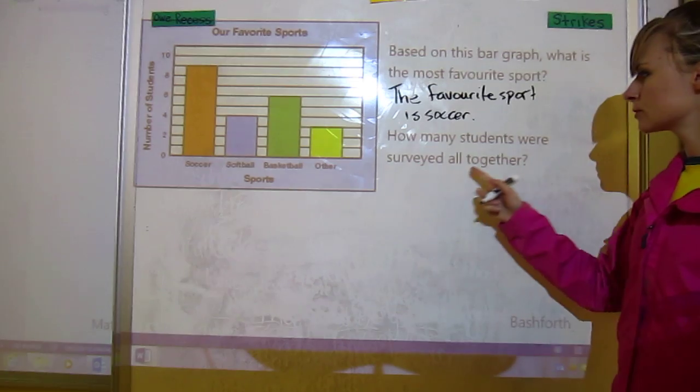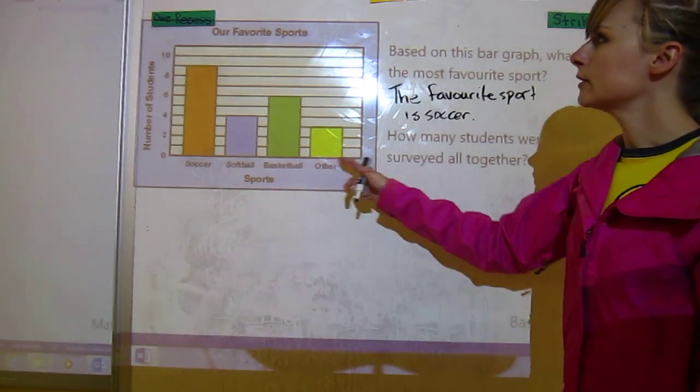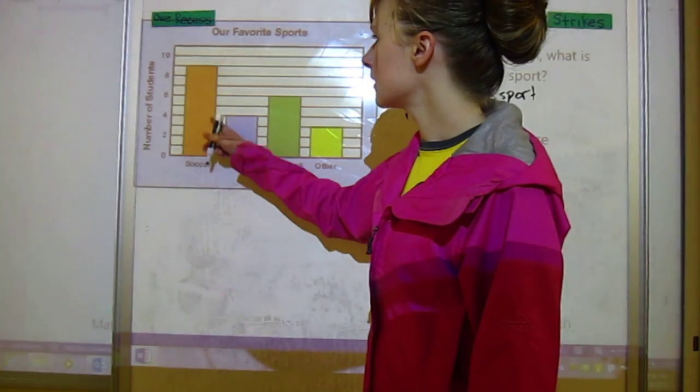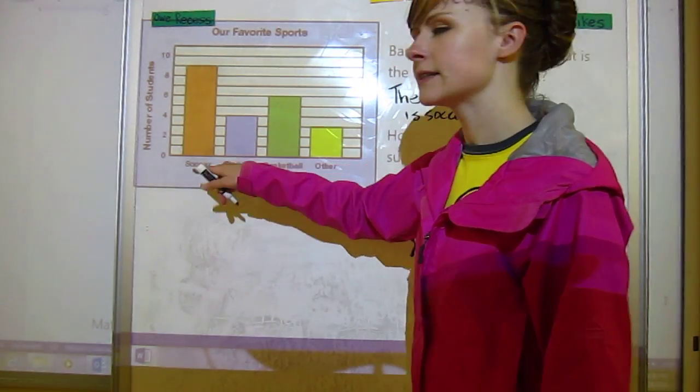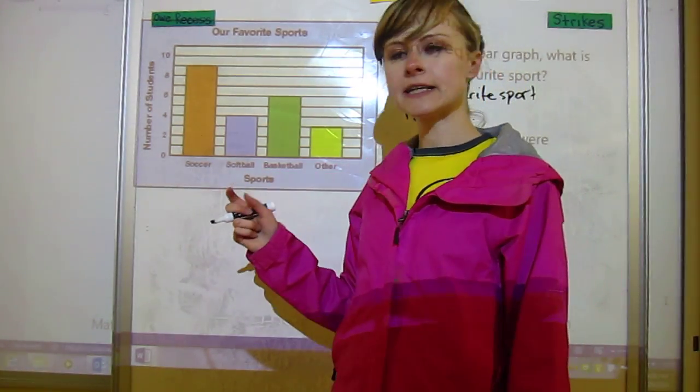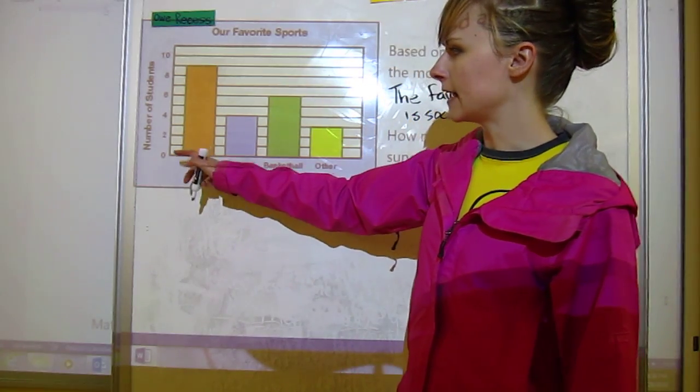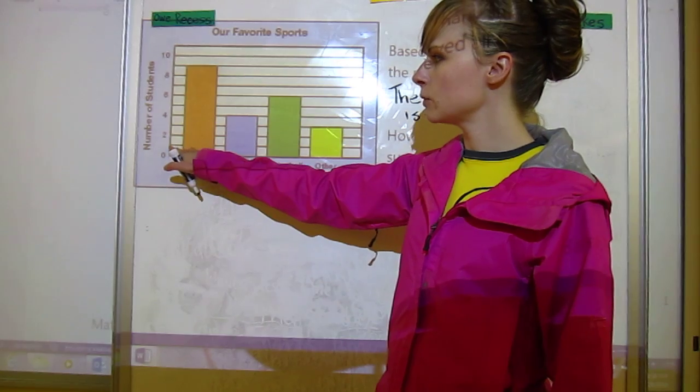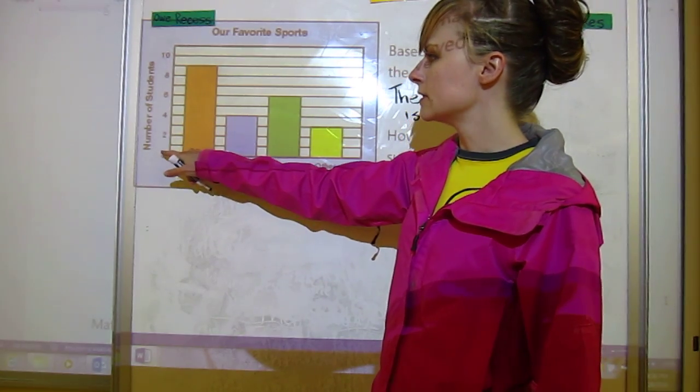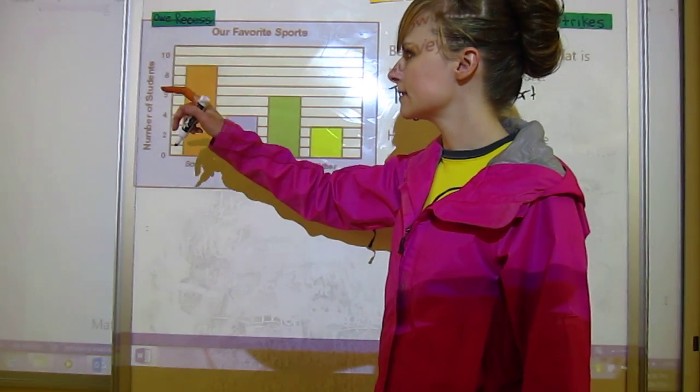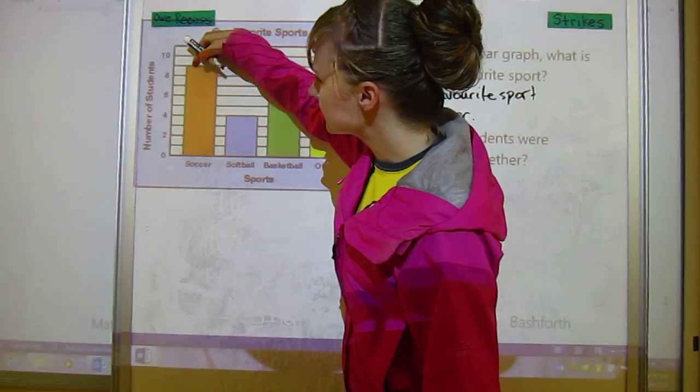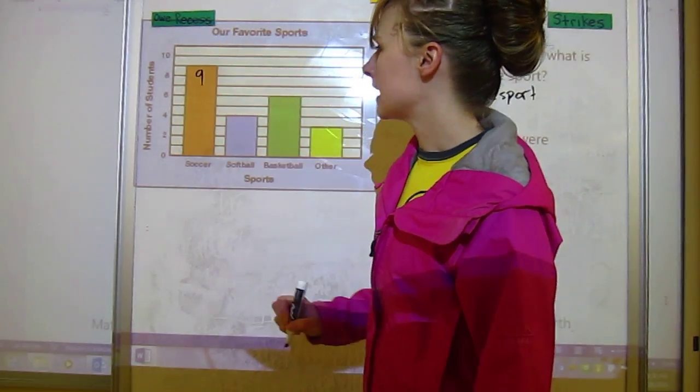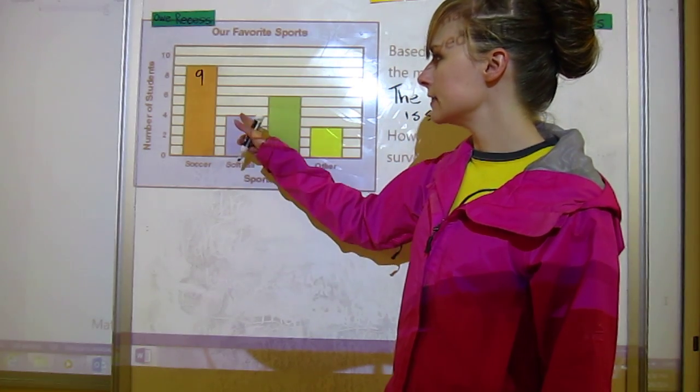Okay, and next one, how many students were surveyed all together? So we're doing kind of what we did up there. Soccer we've got, but we don't get to look at the shapes this time. Now we have to look at the line. So we've got zero and then it's just labeled two, four, six, eight, but everyone in between is the number in between. So zero, one, two, three, four, five, six and so on. So that means that this one's right between eight and nine, or eight and ten, so it makes it nine. Softball is right at four.